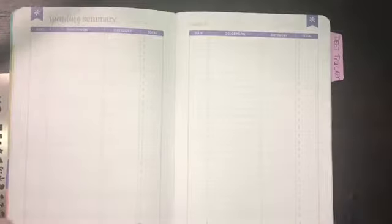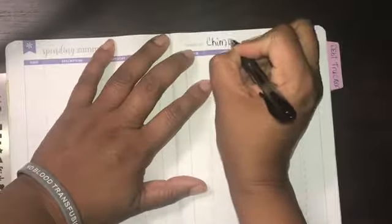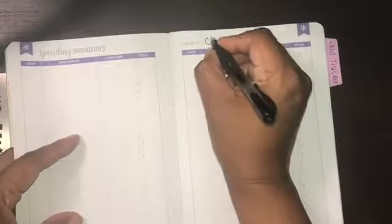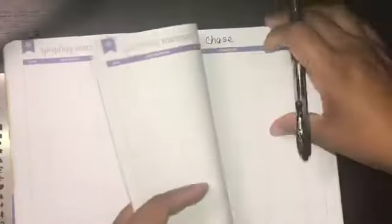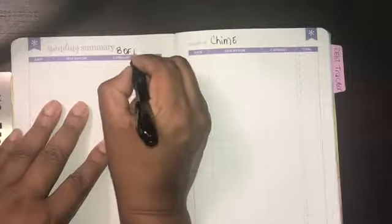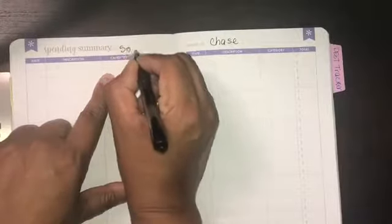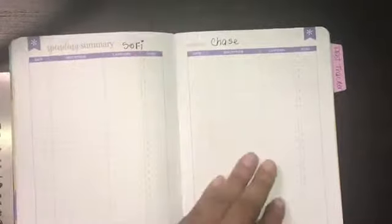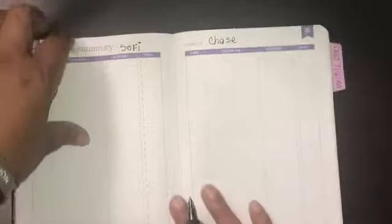Very simple, just black pen. I'm just gonna put right here - I don't use the month part, I just use the name of the bank account that I'm working with: Chime, Bank of America, and I forgot the Credit Union.